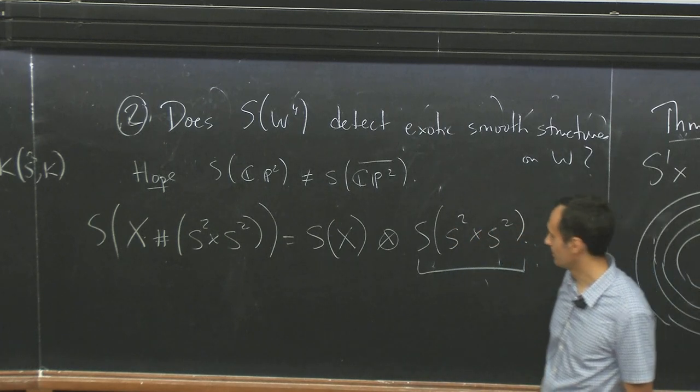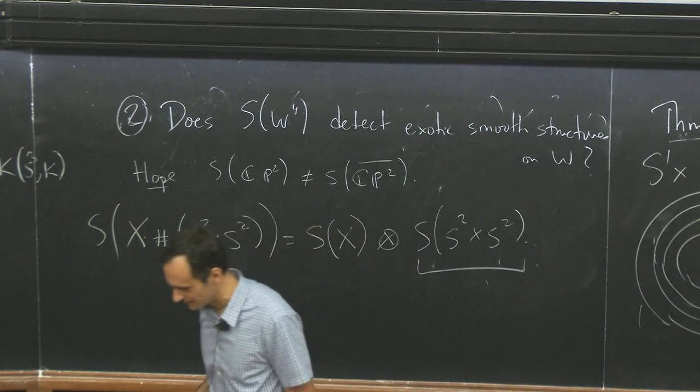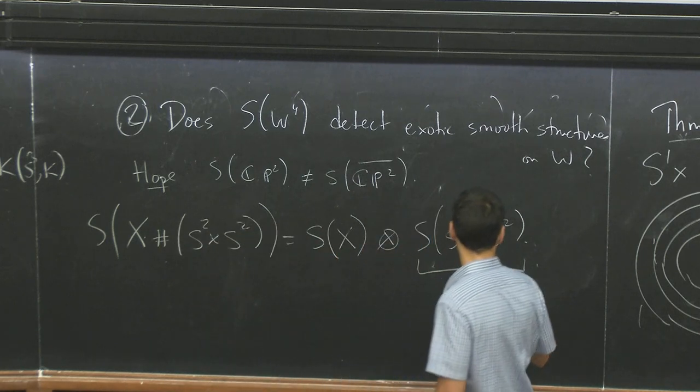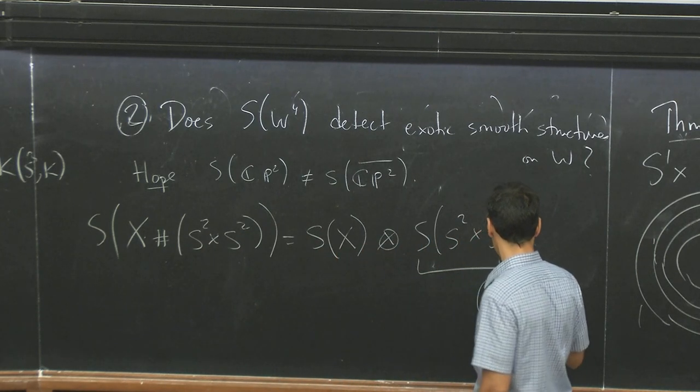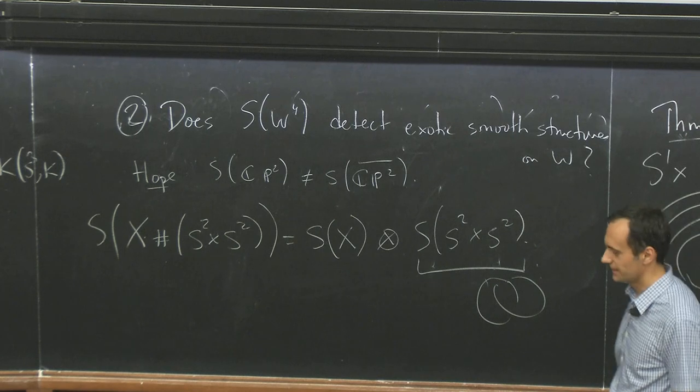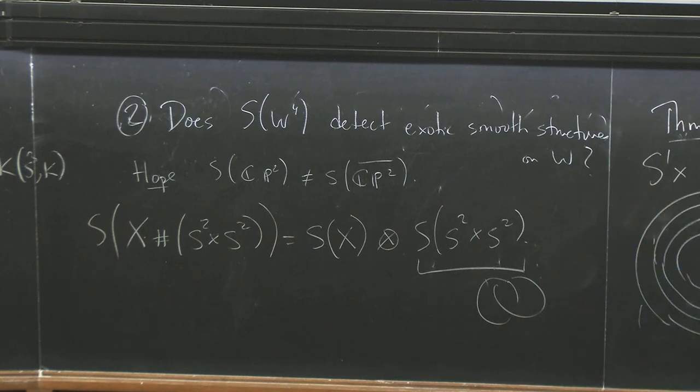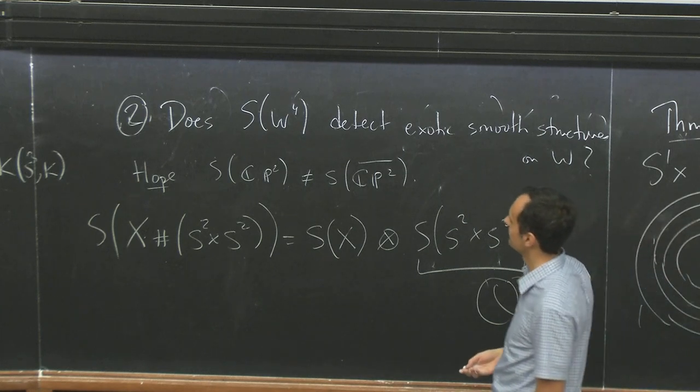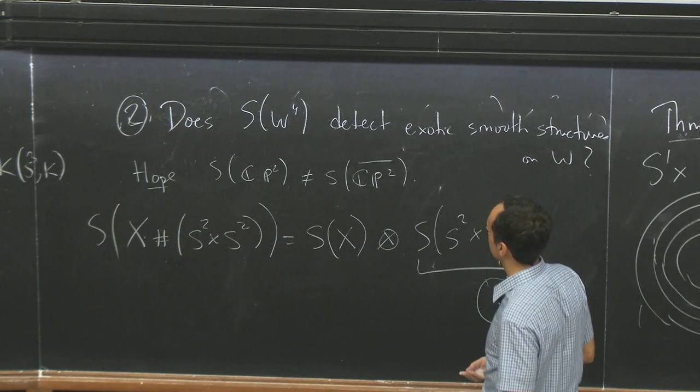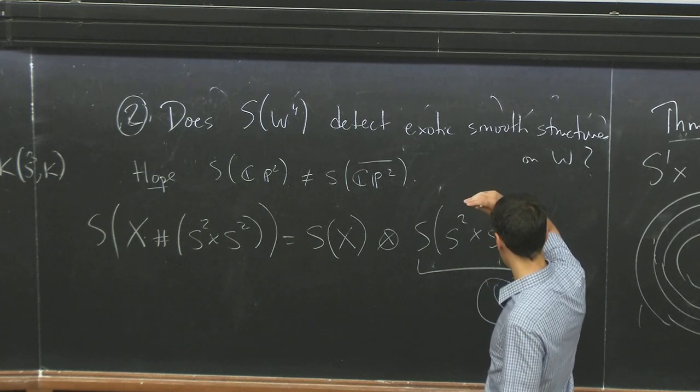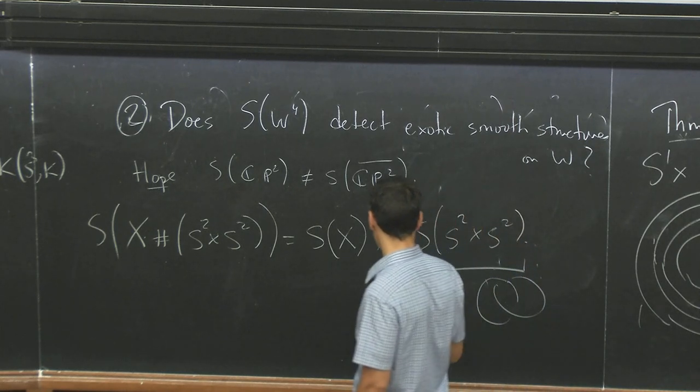But the real question is what happens for S2 times S2. So, you know, most exotic structures, I mean, exotic smooth structures become trivial after you connect some with enough S2 times S2s. So if you do this here, you can show that it's the tensor product of the two parts. So then you would like to compute this, and that would involve, well, it would involve the Hopf link and cables of the Hopf link.